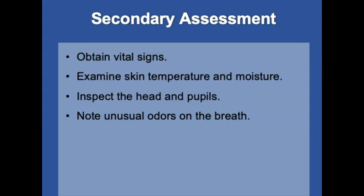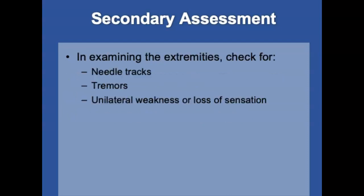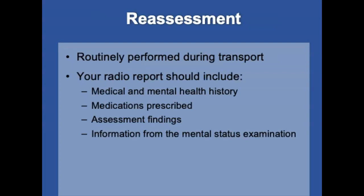During the secondary assessment, obtain vital signs and look for fever or indications of increased intracranial pressure. Examine skin temperature and moisture, inspect the head for evidence of trauma, and check pupils for size, equality, and reaction to light. Note unusual odors on the patient's breath such as alcohol or ketones from diabetic ketoacidosis. In the extremities, look for needle marks, tremors, or unilateral weakness. During reassessment, routinely monitor patients for sudden changes in thought or behavior and include mental status examination findings in your radio report.